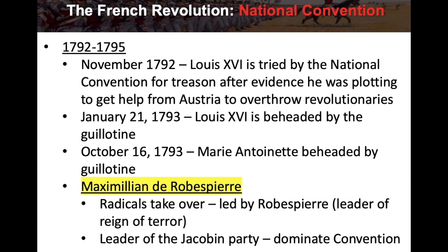After Louis XVI and Marie Antoinette are killed, Robespierre — who is in the government and is radical — takes over along with the radicals. He is basically the leader of the Reign of Terror, a phase of the French Revolution lasting about a year in which a lot of people were killed.